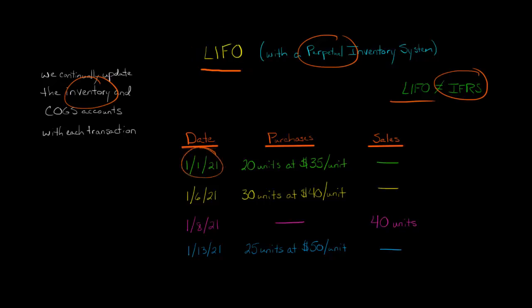So on the first, we're going to say, well, we bought 20 units at $35 a unit. So we're going to increase inventory by $700. And then we're going to increase inventory when we make another purchase. And but then on January 8th, we sell 40 units of inventory. So as of this point in time, January 8th, we have to make a journal entry. We have to make a journal entry and we're going to debit cost of goods sold and we're going to credit inventory. But the question is, how much?